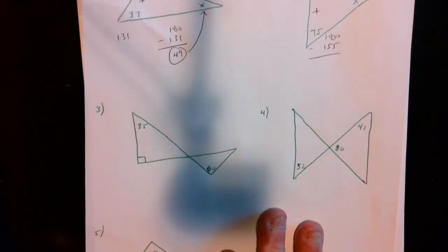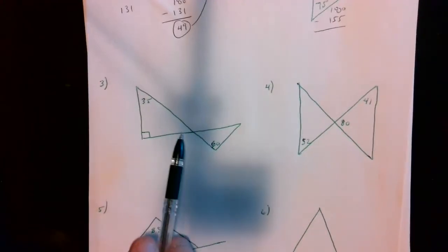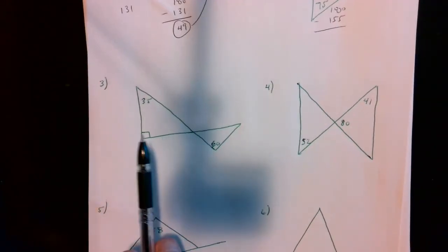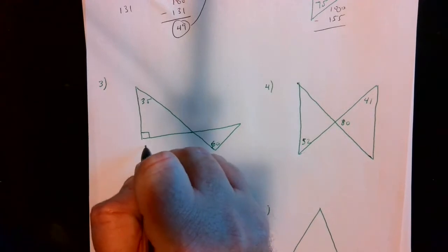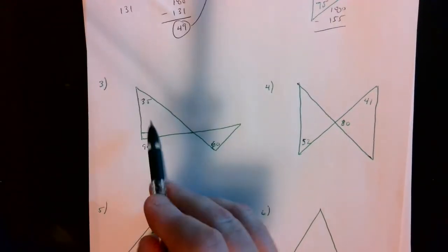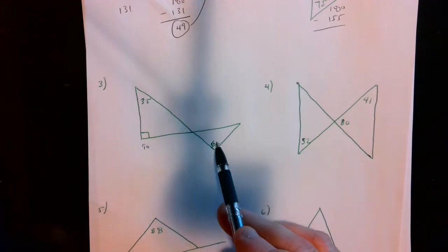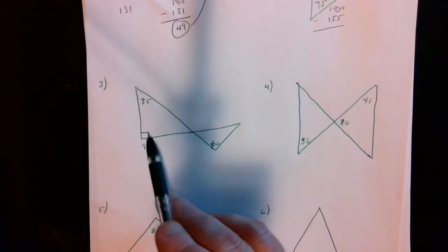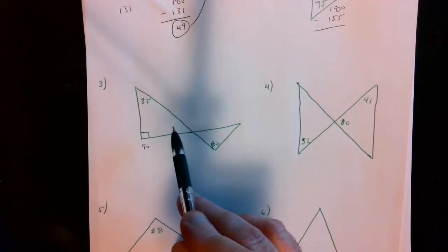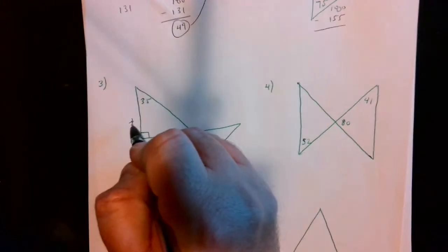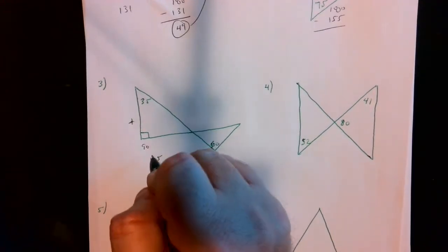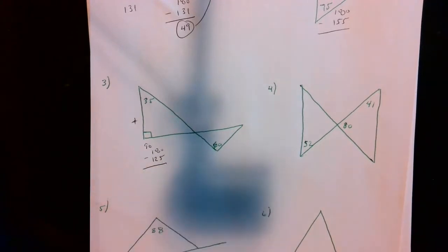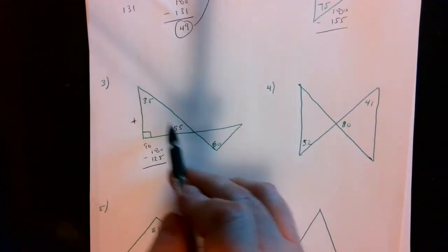Problems get trickier when we have two triangles. Here, I can see this angle is 90. In the left triangle I have two angles, so I can find the third: 35 plus 90 is 125, and 180 minus 125 makes this piece 55. Then, using vertical angles from our previous lesson, the angle across is also 55. Adding 55 and 60 gives 115, and 180 minus 115 makes the last angle 65.